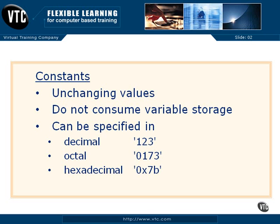Constants can be specified when you create them in decimal. There you see the decimal 123 inside single quotes — that's a decimal value defined as a constant. Octal simply has a leading zero, like 0173, which is also 123 decimal. And hexadecimal 0x7b is again 123 in decimal. So those are some ways you can specify constants using different notations.